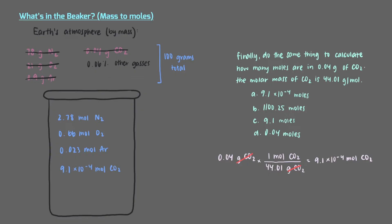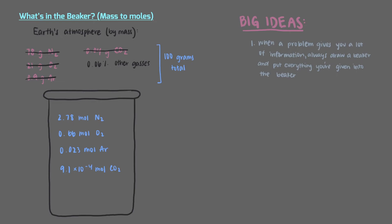This process of converting everything from mass into moles may seem tedious, but we've just practiced a few really important skills. First, whenever you have a problem that provides a lot of information, like this one, we always draw a beaker and put everything that you're given in the problem into the beaker. And when we fill up the beaker, we always convert everything from mass into moles. In chemistry, masses don't really tell us much.